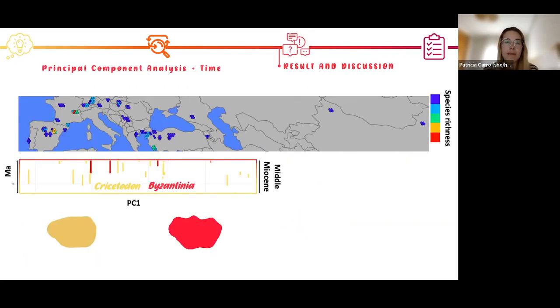After that, during the middle Miocene, another genus appeared, Byzantinia. Byzantinia was recorded in Anatolia and Greece and presents this trilophodont outline. So we have two different morphologies, the straight one and the trilophodont one. And the most species-rich fossil sites of the map are in the Iberian Peninsula and in the center of Europe.